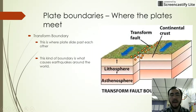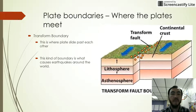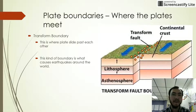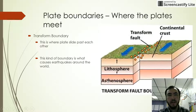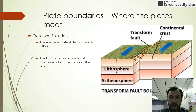Every plate meets other plates somewhere on the ocean floor. These places are called plate boundaries — this is where the plates meet. There are three forms of plate boundaries: transform, convergent, and divergent. A transform boundary is where the plates slide past each other. You have a transform fault where one plate is going one way and another plate is going the other way.